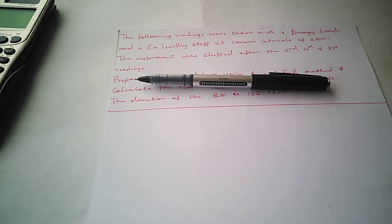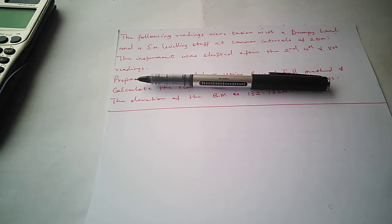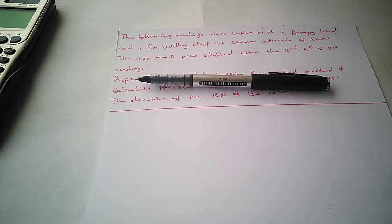Leveling is performed at chainages, which can be 5 meters, 10 meters, 20 meters, or 25 meters, depending on the type of job or specification given. When doing leveling, you don't need to center over a point; your instrument just needs to be placed where you can see the leveling staff. The person holding the staff must ensure it is held vertically upright so that observations will be accurate.